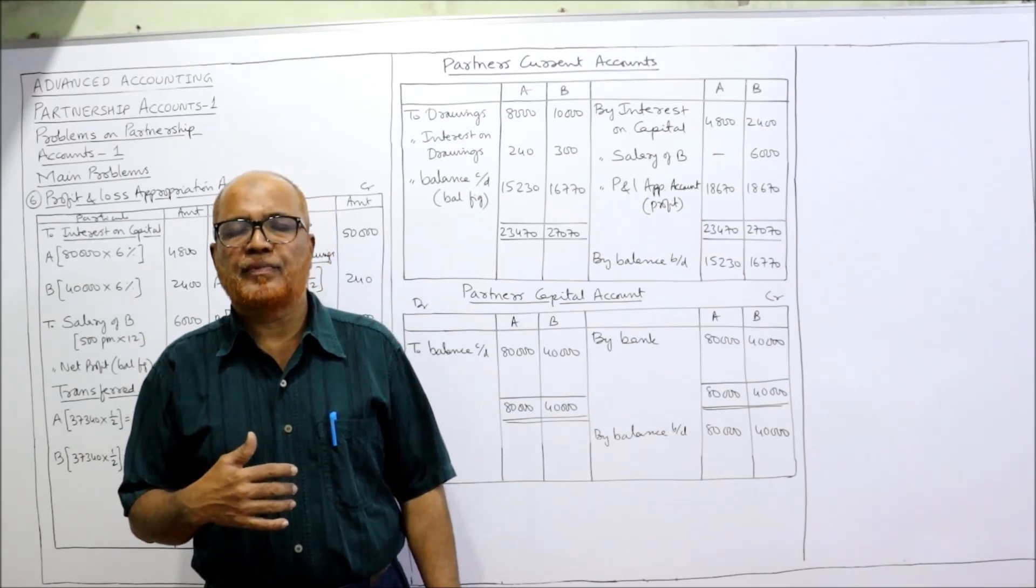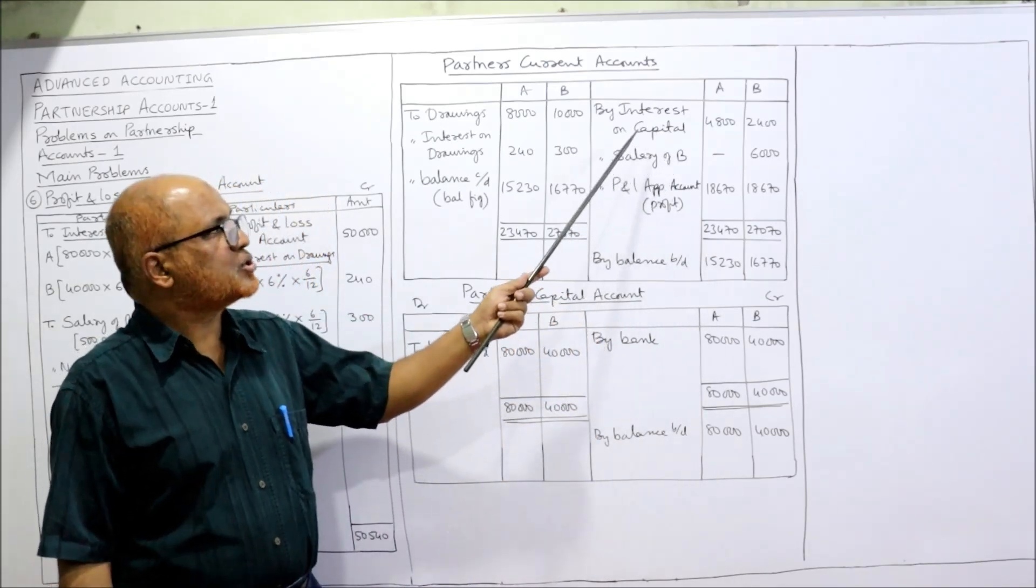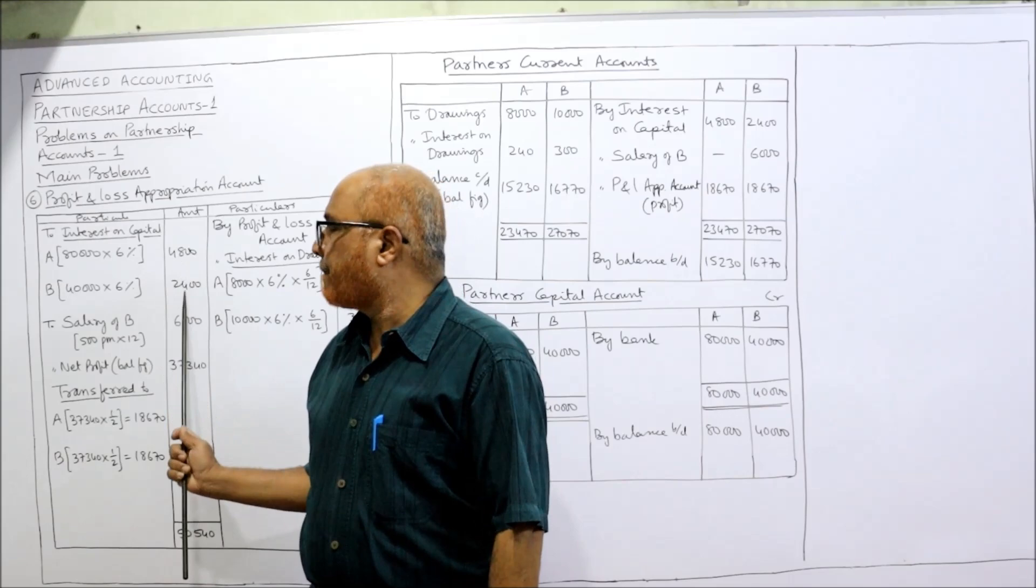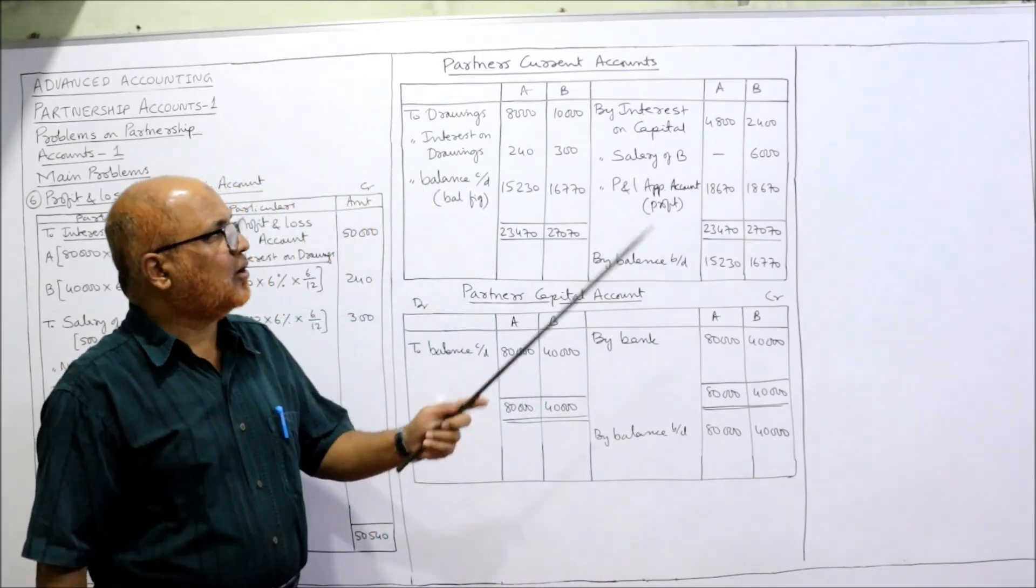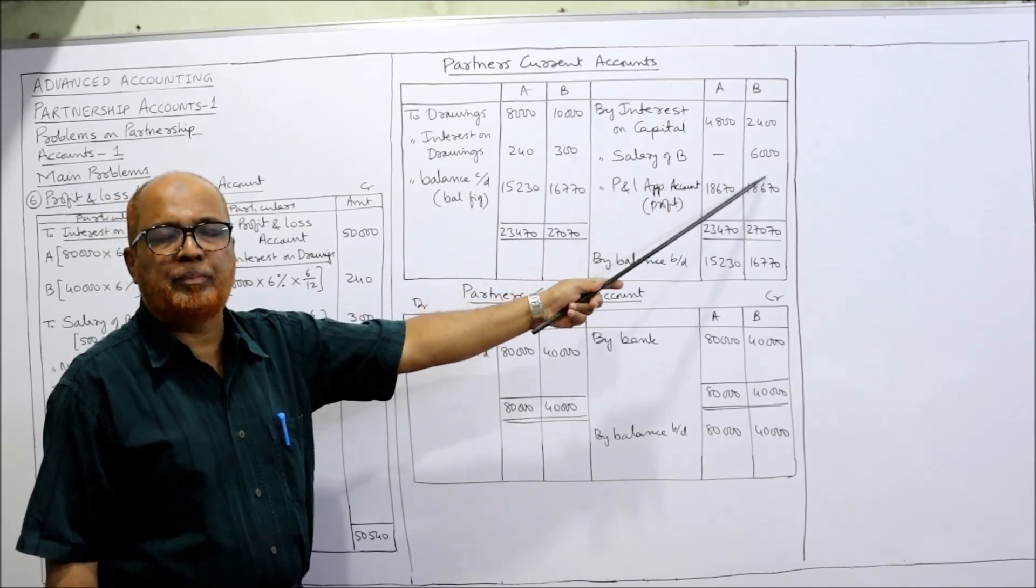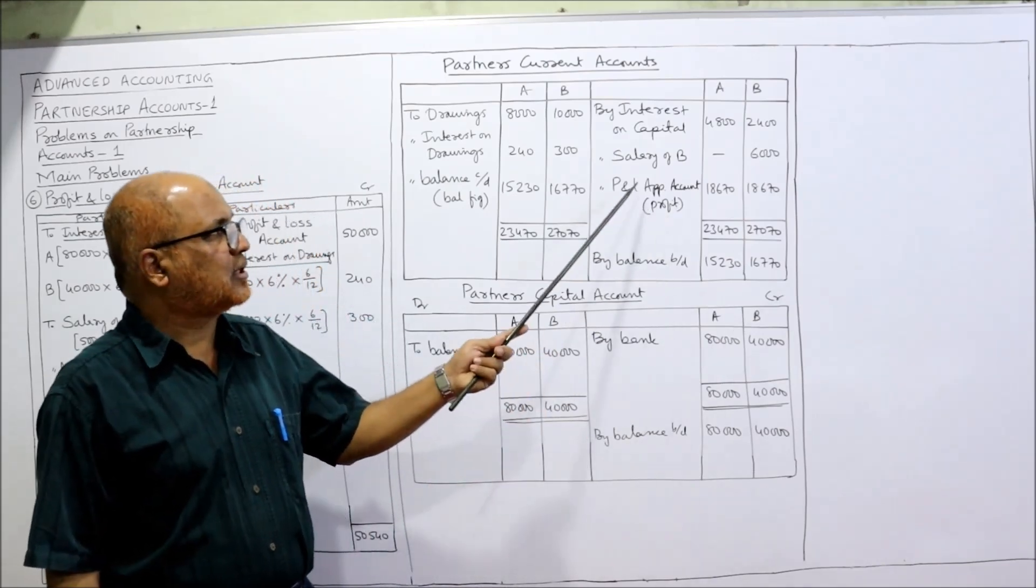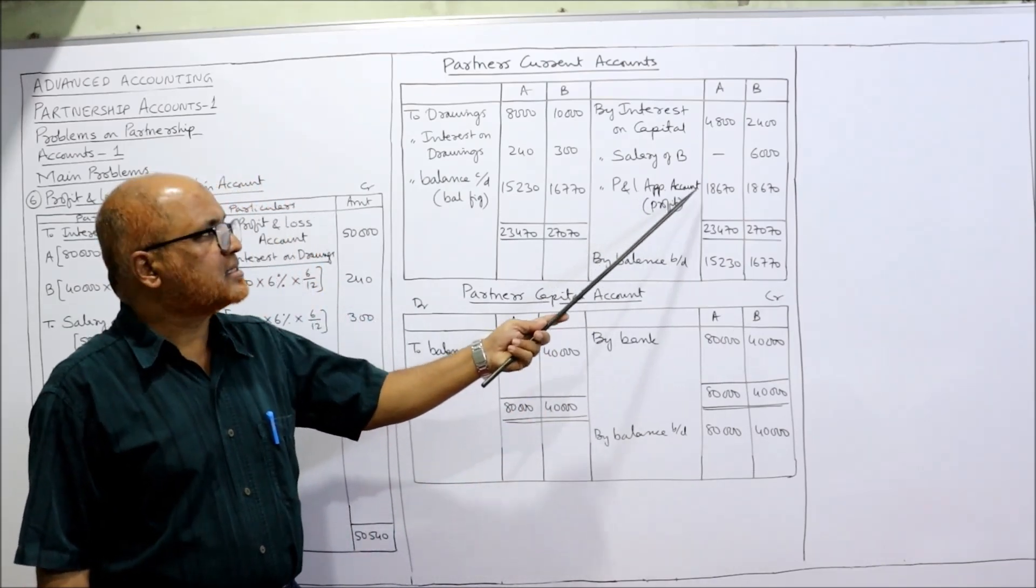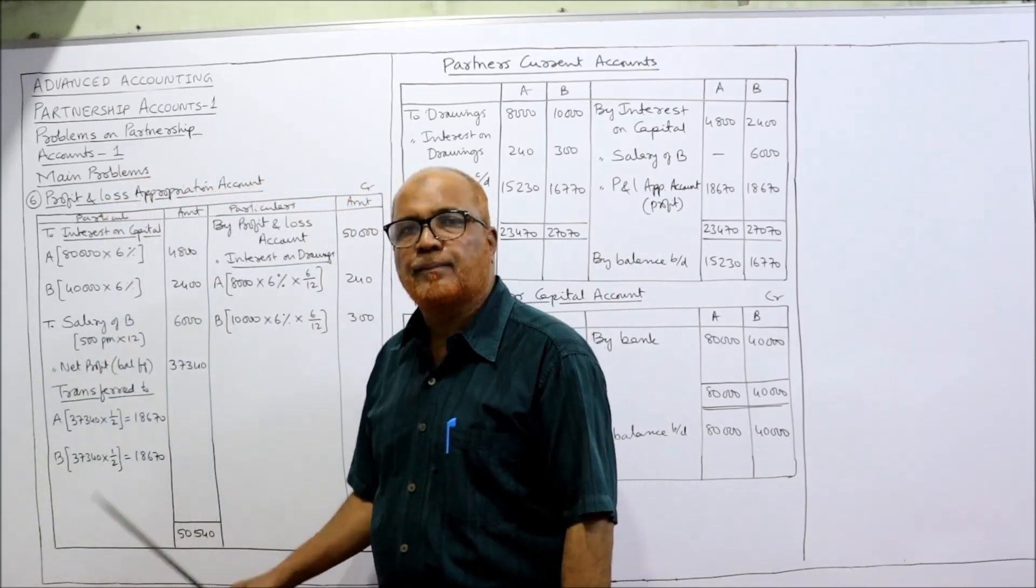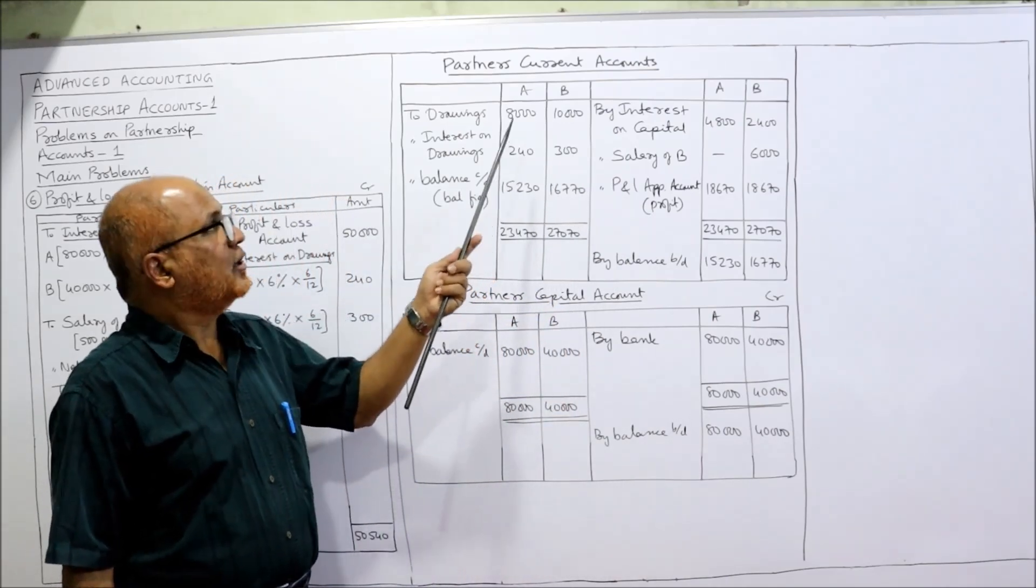First credit side: whatever the partner gets from the firm will be taken on the credit side. The partners are getting interest on capital: 4,800 and 2,400, already we have calculated here. Apart from that, salary of B: B is given the salary of 6,000, so only in column of B, 6,000. And profit and loss appropriation account, that is the profit, so each partner gets 18,670. We have calculated here 18,670.